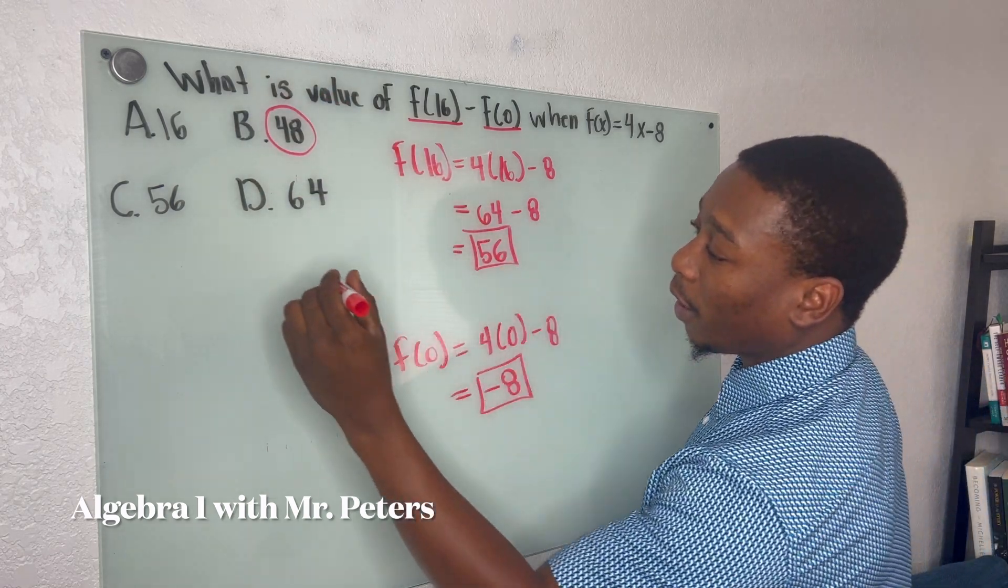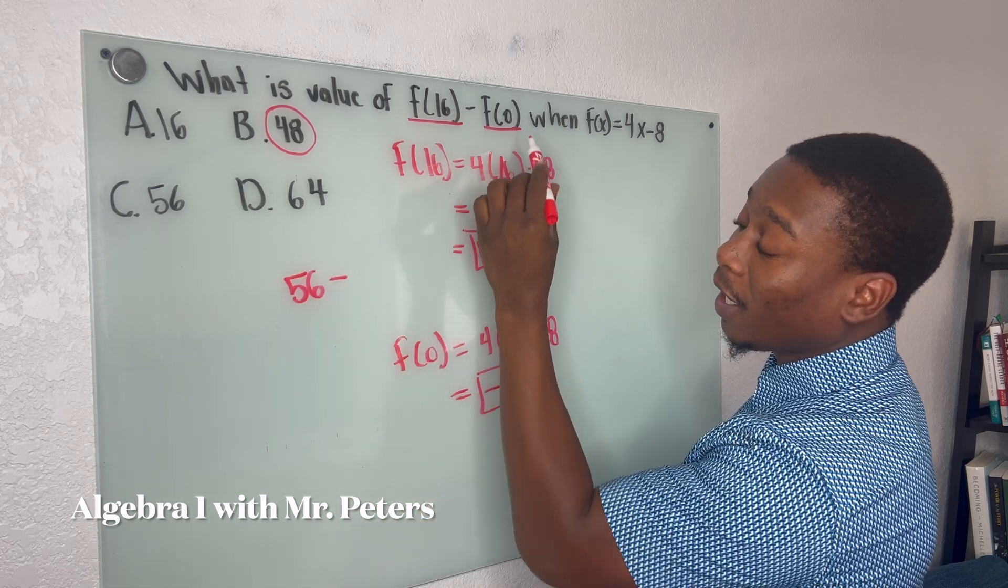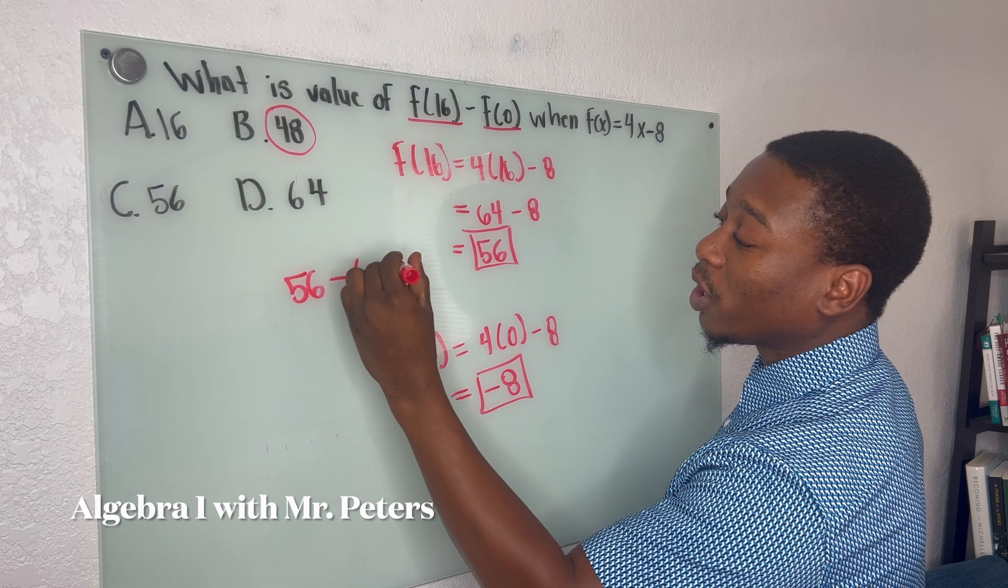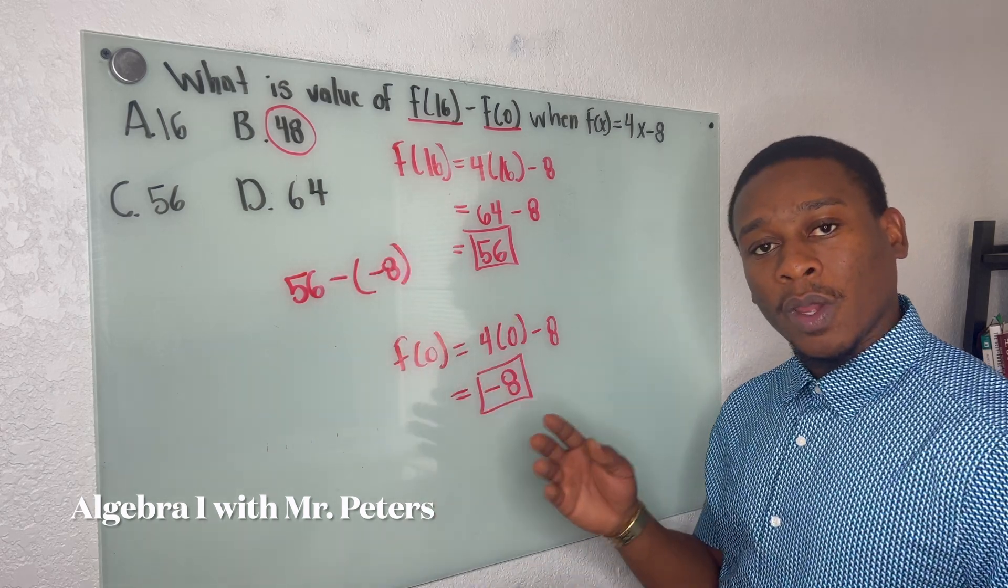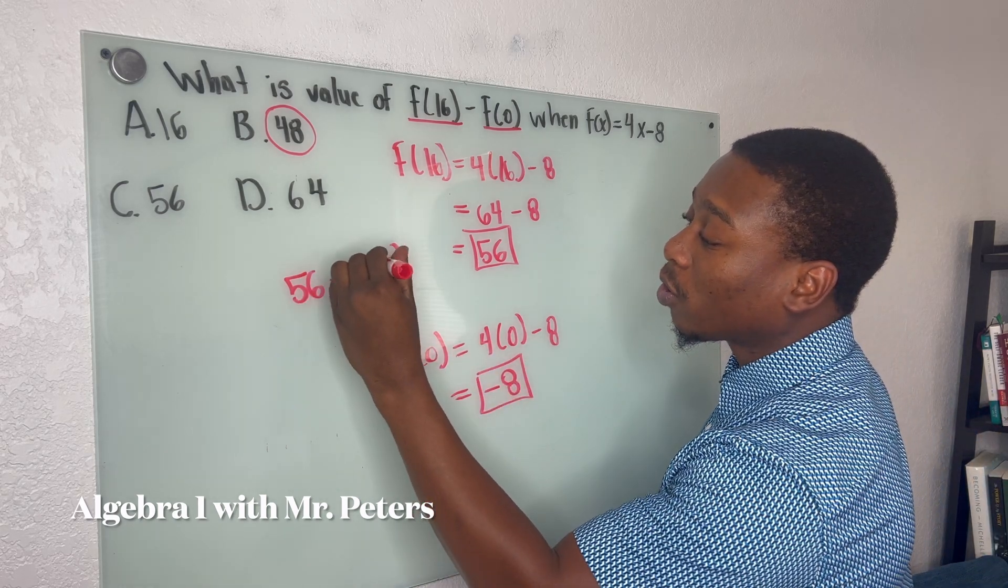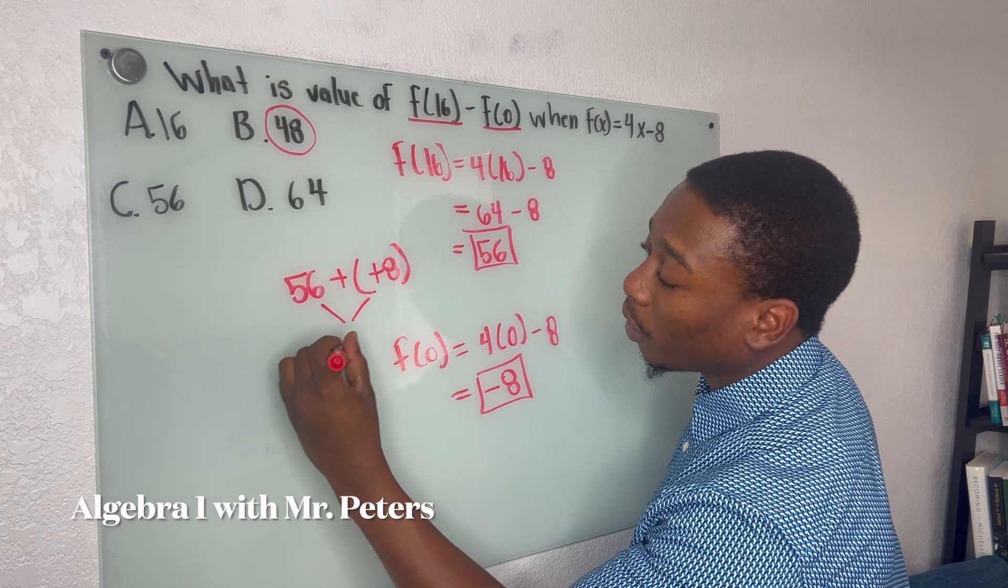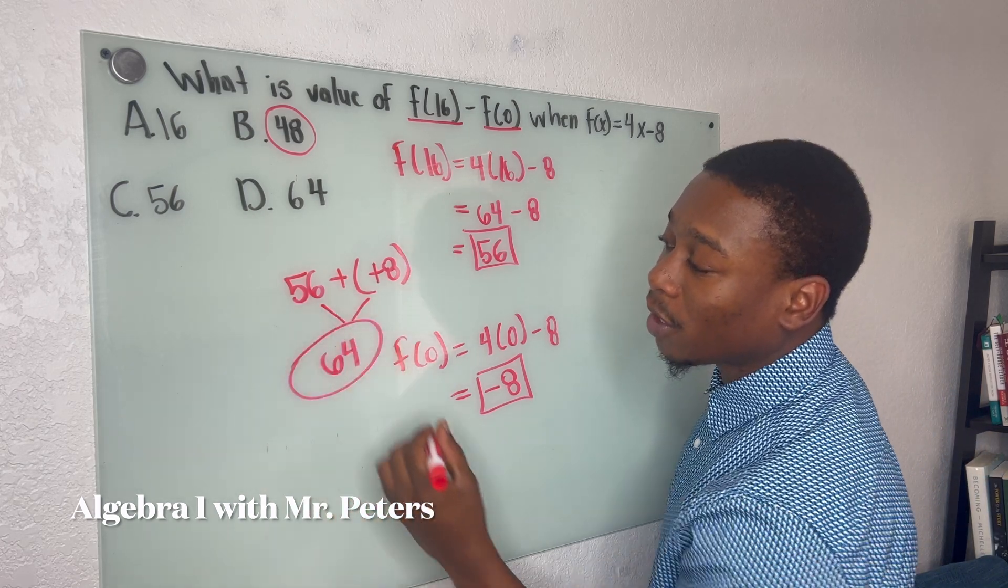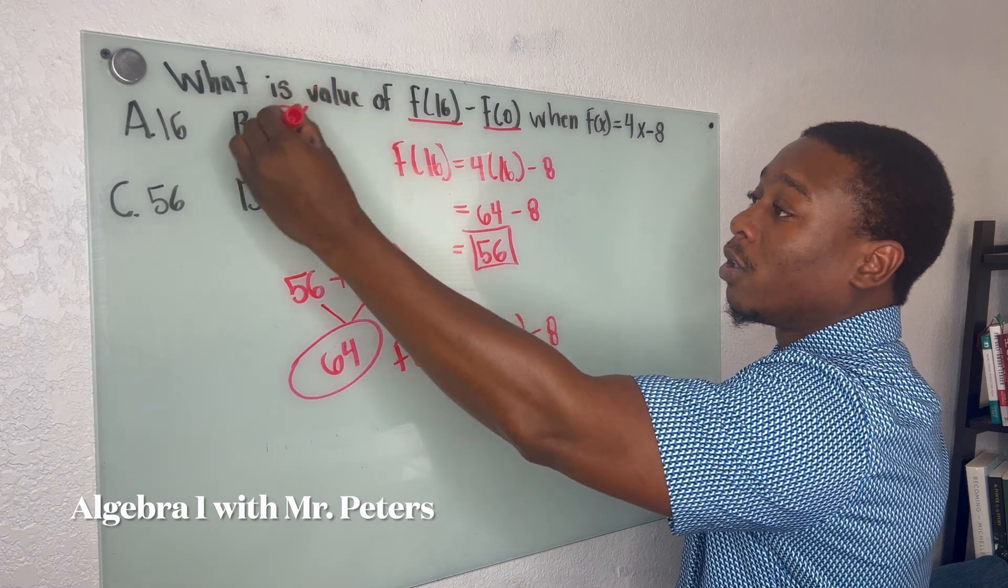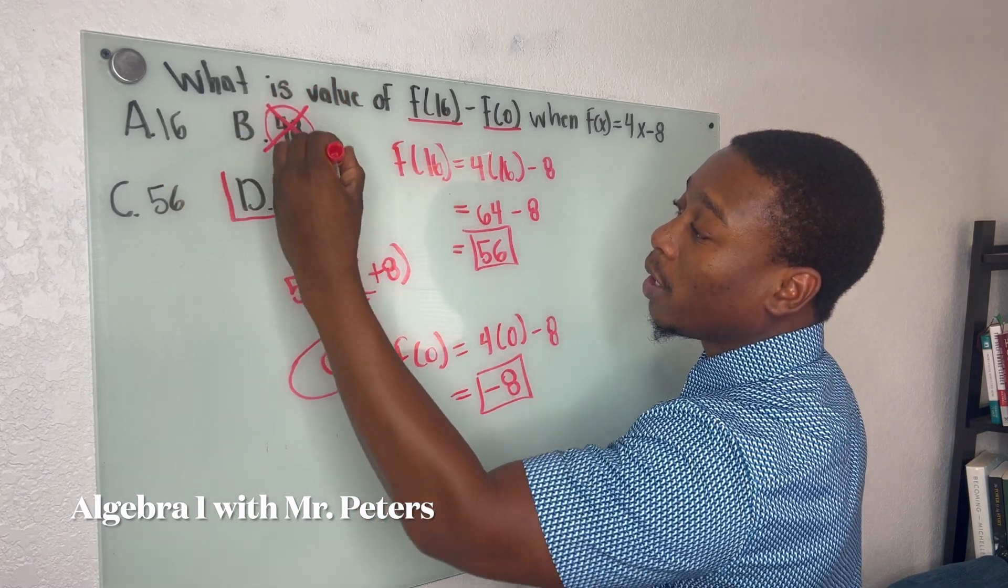OK, the reason why is because we're going to do 56 minus the answer of f(0), which is negative 8. So you guys know when we subtract a negative number, it's going to turn positive. So we actually add these two answers, and the final answer would be a positive 64. So the correct answer in this problem would be D.